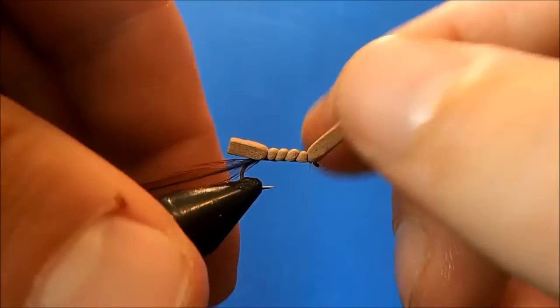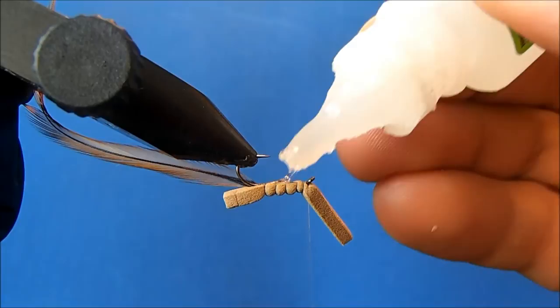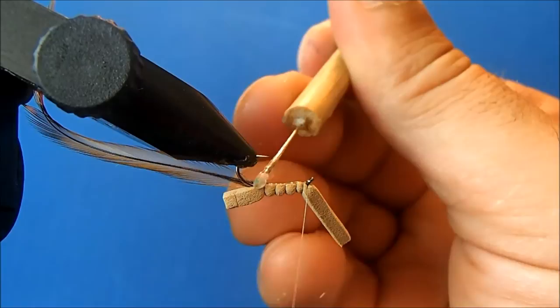Alright, I'm going to leave that tag end of the foam on. I'm going to be using that here in the pattern as well. So now just to make this a little stiffer, I'm going to add just a drop of Zap-a-Gap on there. You can use head cement or nothing at all.